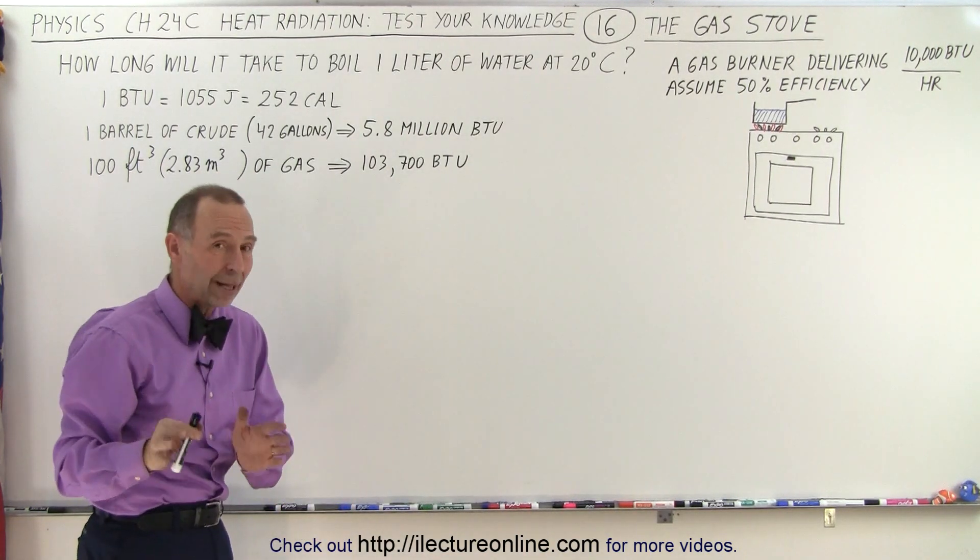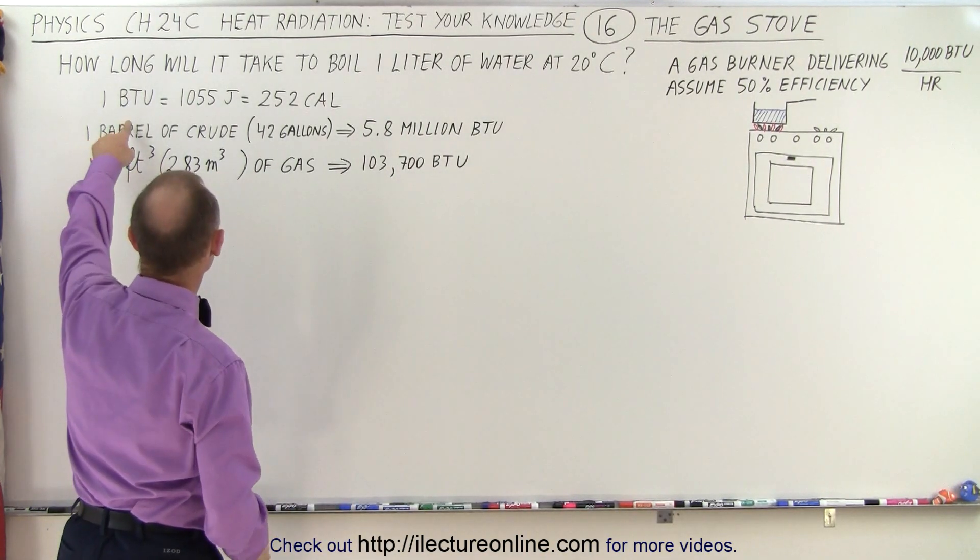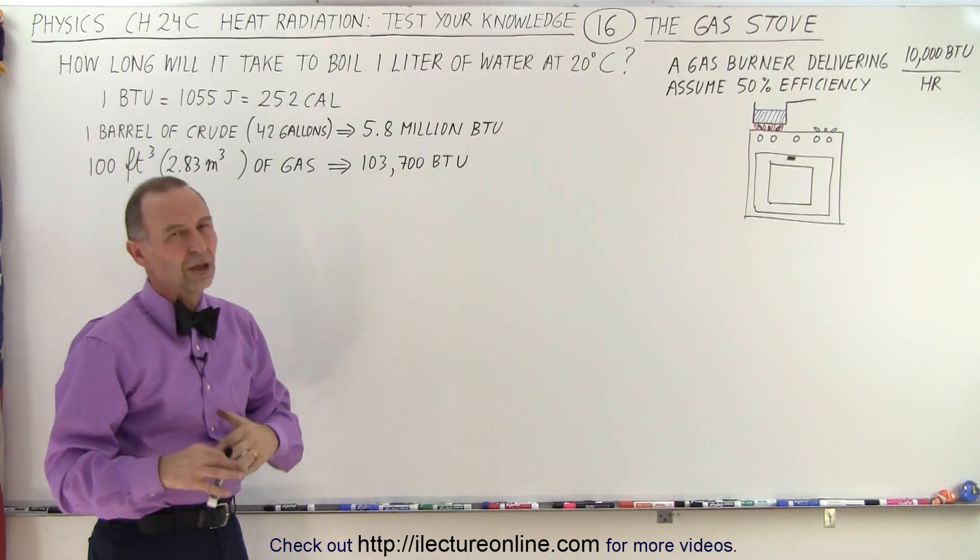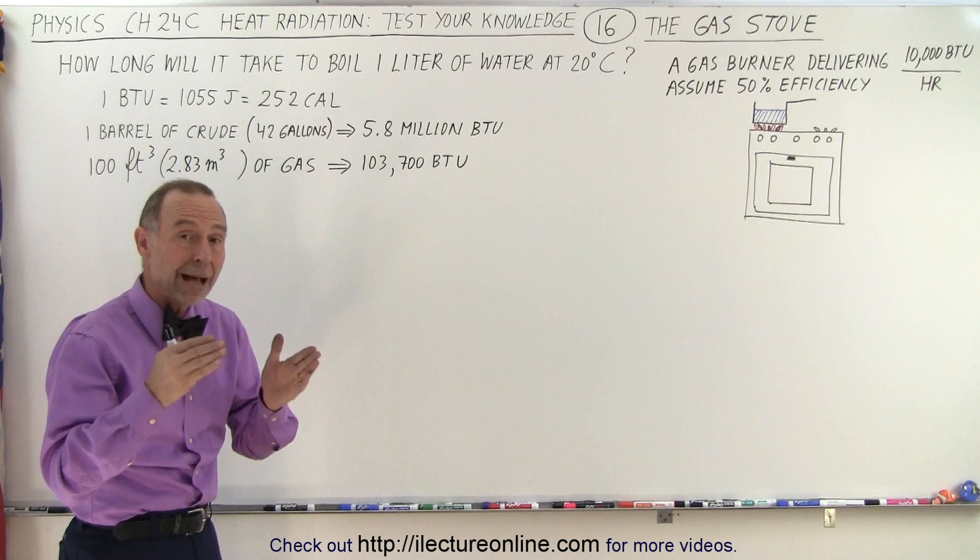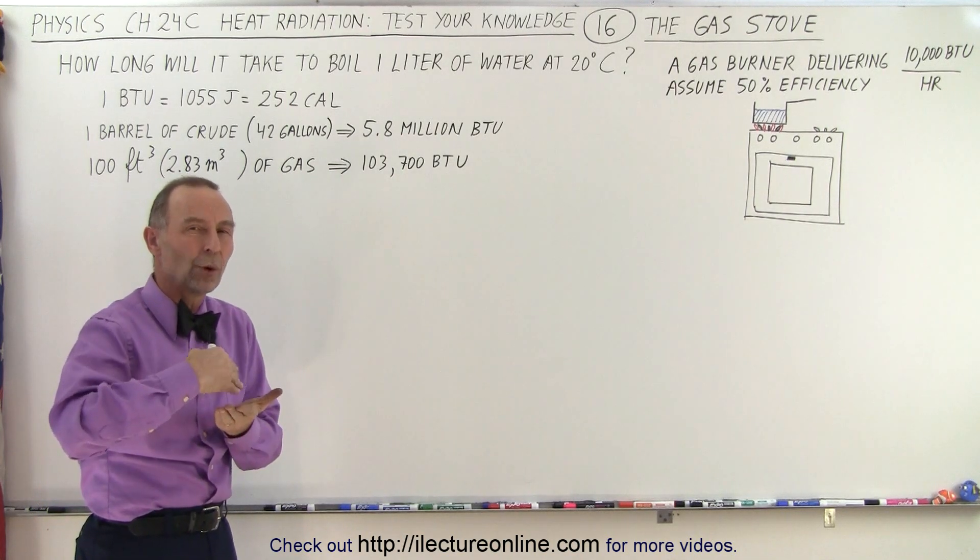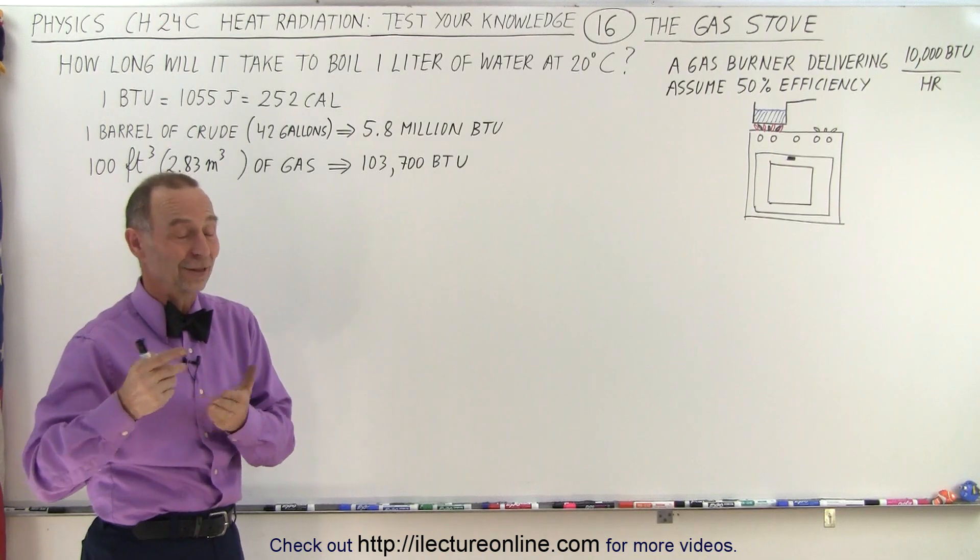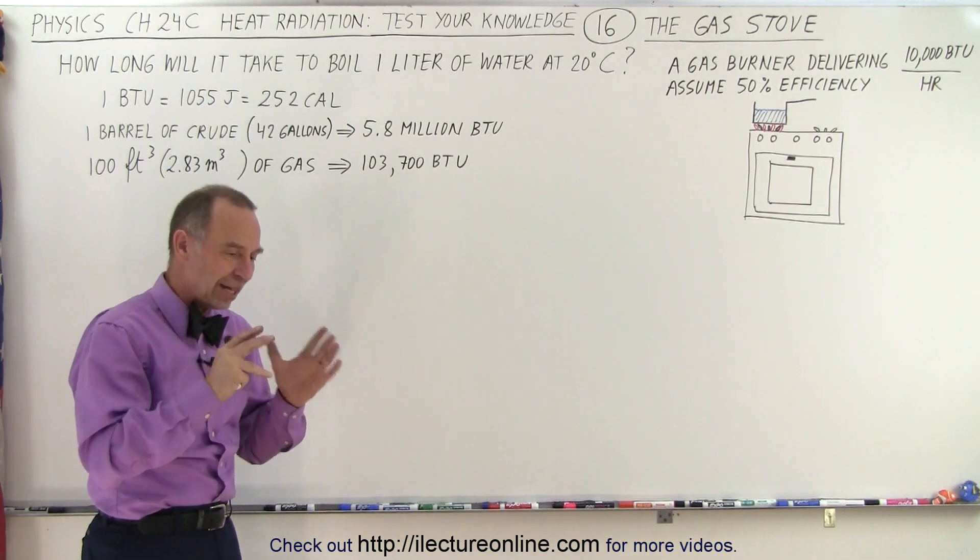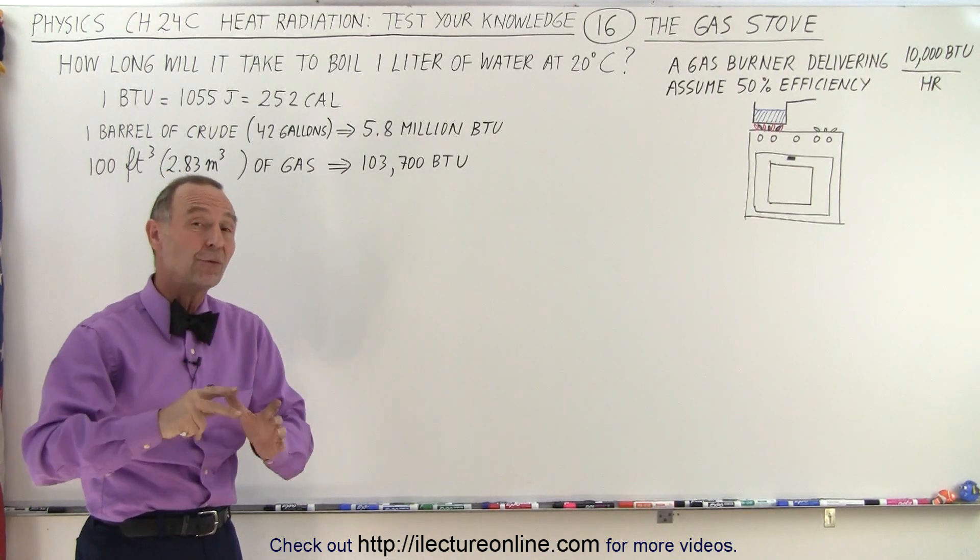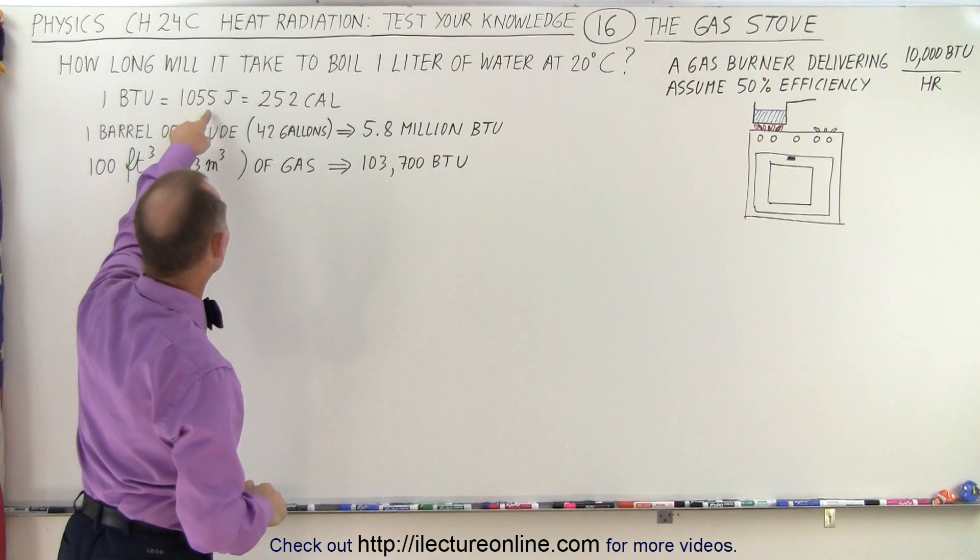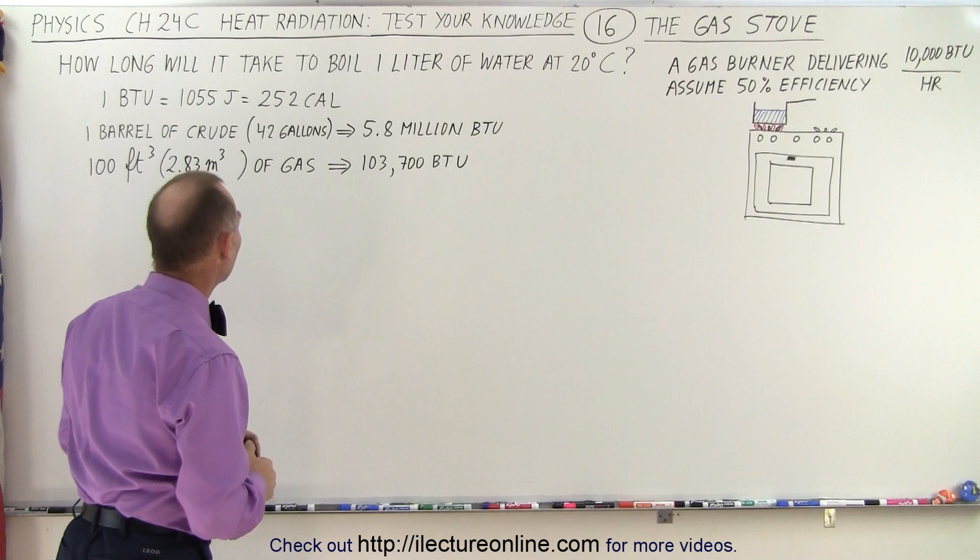Now we need to know a few things about BTUs. A BTU is the energy that's equivalent to 1055 joules. A BTU is the energy to take 1 pound of water and raise it by 1 degree Fahrenheit. So 1 BTU is the energy required to take 1 pound of water and raise it 1 degree Fahrenheit, about 1055 joules and 252 calories.